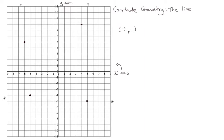Say I give you the coordinates (3, 5). The first coordinate tells us where we look on the x-axis, and the second coordinate tells us where we look on the y-axis. Here we have plus 3 — there's no sign in front, which means it's positive — so we go along the x-axis to 3, and then y is 5, so we go up to 5. Let's call this coordinate A.